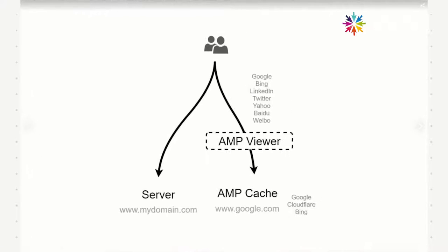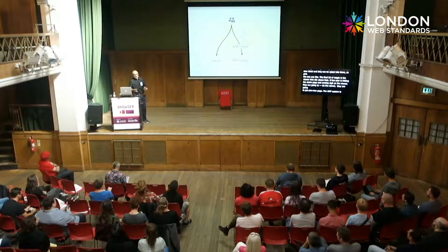If you follow all those rules, you've got a valid AMP page. In the bottom left you've got your code shipped to your domain, and on the bottom right you've got an AMP cache - basically a CDN that will host your page if it's valid AMP. Traditionally it was only Google, but now Cloudflare and Bing also provide CDNs, so you don't have to opt into one ecosystem. The final bit of magic is the viewer that sits above that - if a user hits your AMP cache page via the viewer, they get that preload experience.